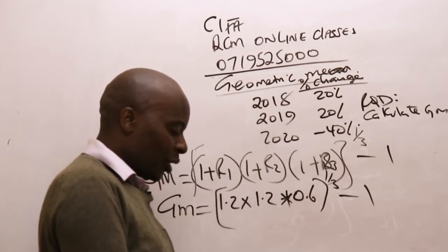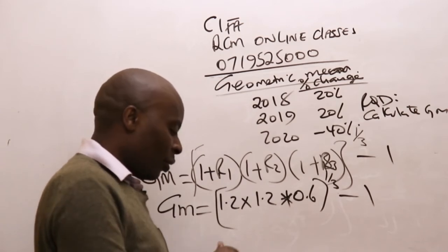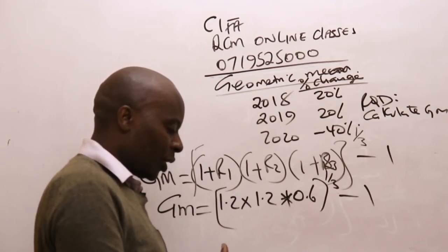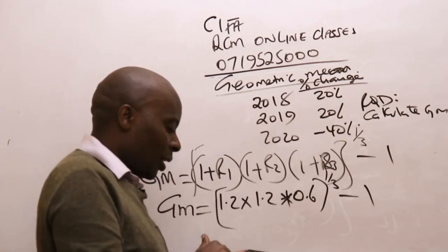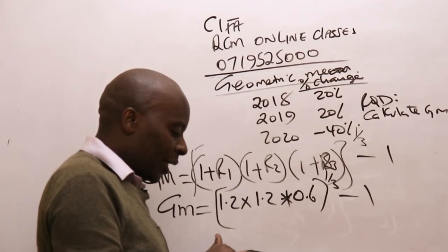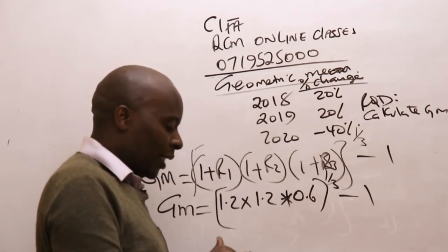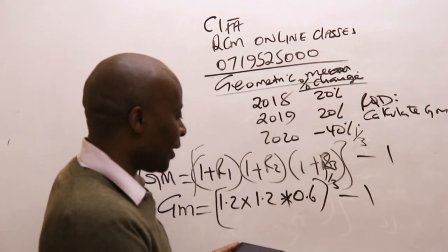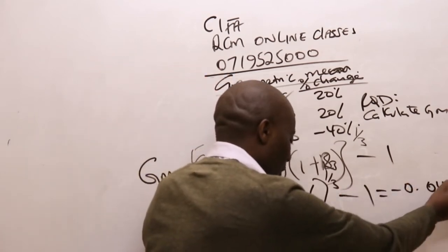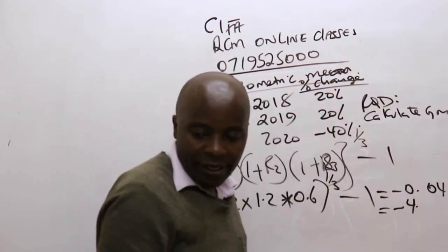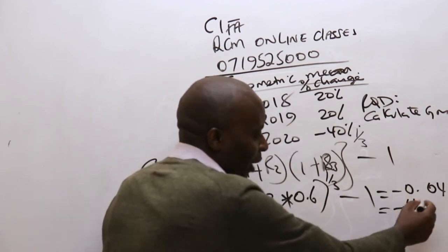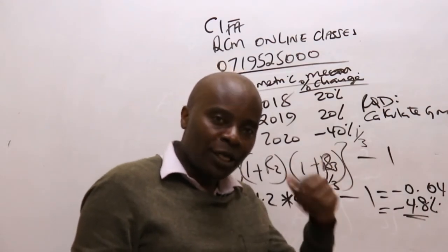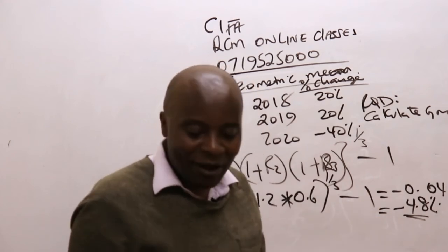Our geometric mean in this particular case will be: 1.2 × 1.2 × 0.6, all raised to the power of one divided by three, then minus one. This gives a loss of minus 0.048. So percentage-wise, this is minus 4.8%. Averagely, our share price was reducing by 4.8% per annum on average. That's how we compute the geometric mean.